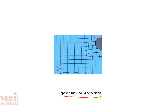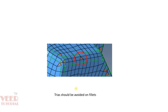There should be no opposite trias. Here we can see there is a tria here and a tria here. The direction of this tria is one way and for the other tria it is the opposite direction — so these are opposite trias. We should avoid opposite trias, because whenever we do the remesh of opposite trias, they will cancel each other. Also on the fillet area, we need to avoid trias.